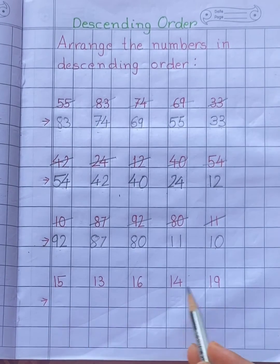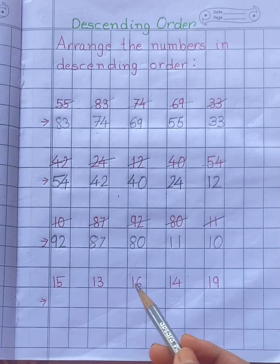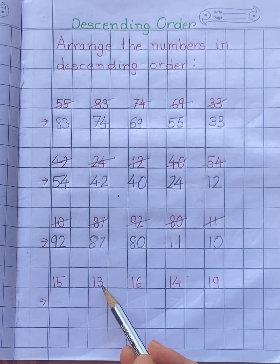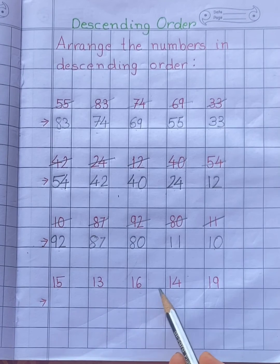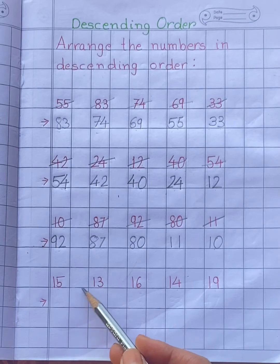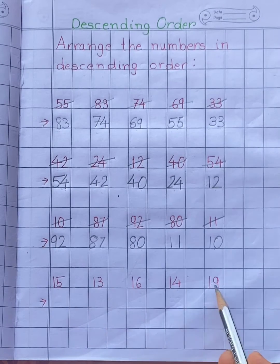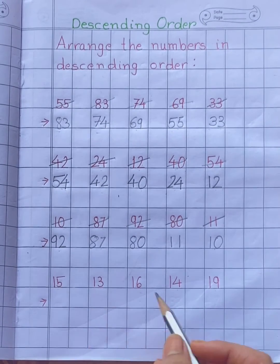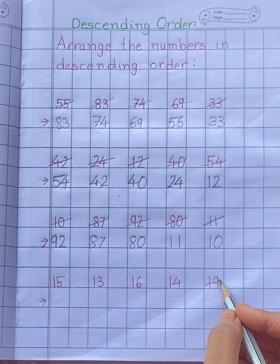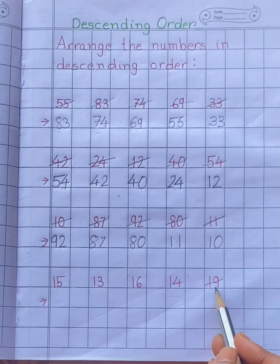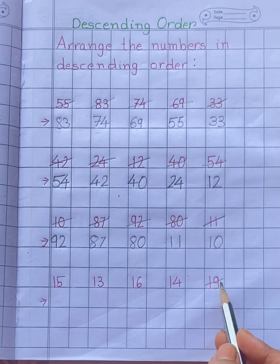Now let's arrange another group of numbers. Look at these numbers: 15, 13, 16, 14, 19. Tell me, children, among the given numbers, which number do you think will come first? Yes, the biggest number will come first. So the biggest number is 19.